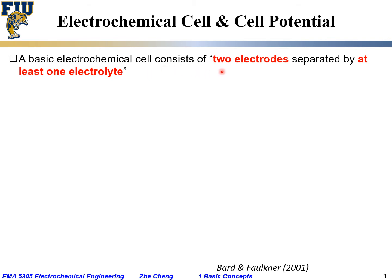...that consists of at least two electrodes separated by at least one electrolyte — at least one phase that conducts primarily ions — and two electrodes: one positive electrode and one negative electrode, one where oxidation happens and one where reduction happens. That is an electrochemical cell: one electrolyte in the center and the two electrodes, one side negative, the other side positive.